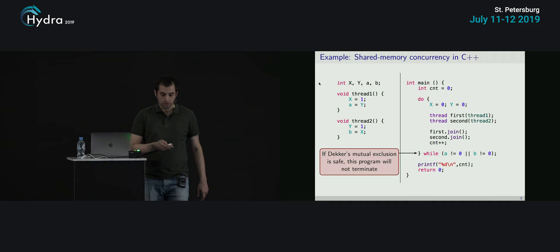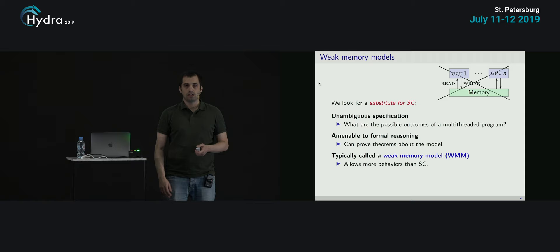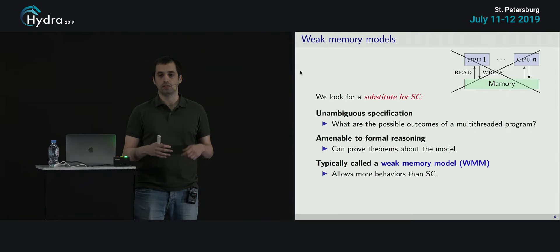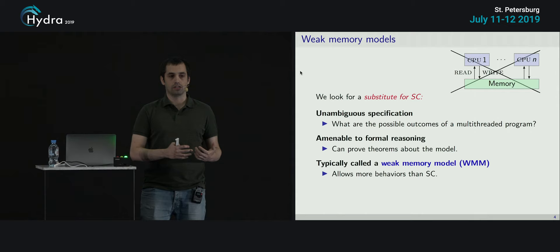So what's going on here? We don't understand — if we assume sequential consistency, we cannot even understand what our programs are doing. We need better semantics. This is where the C++ model starts. Every weak memory model tries to formalize what kinds of behaviors are allowed and not allowed for a program. We look for a substitute for sequential consistency. It should be unambiguous, amenable to formal verification — we want mathematical proofs. This is typically called a weak memory model, because it allows more behaviors than sequential consistency.